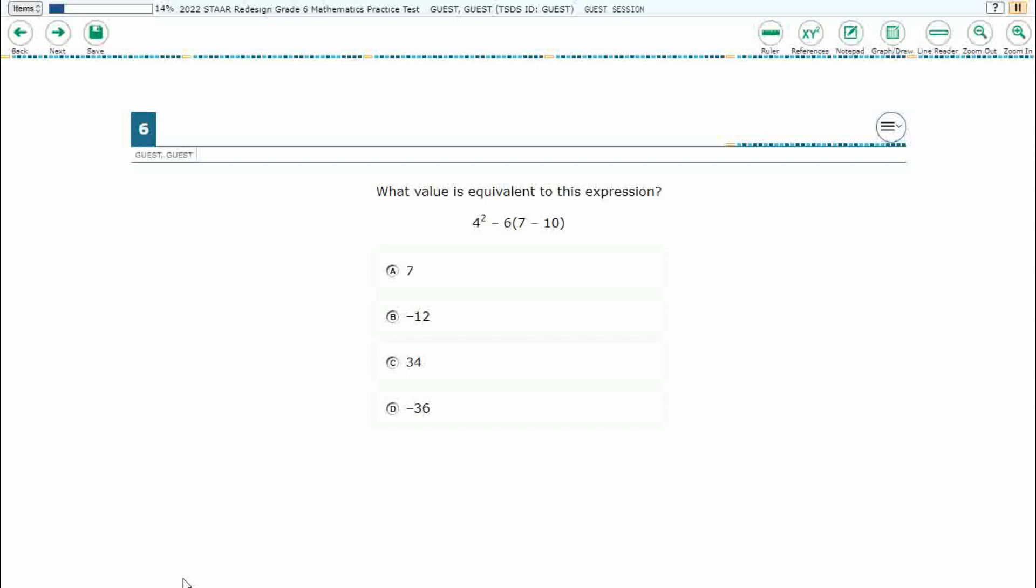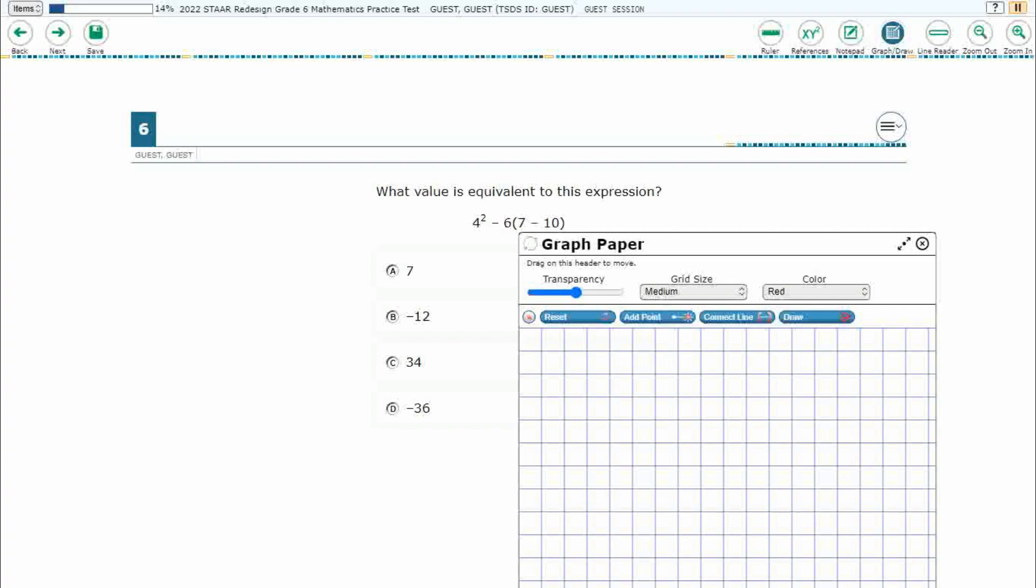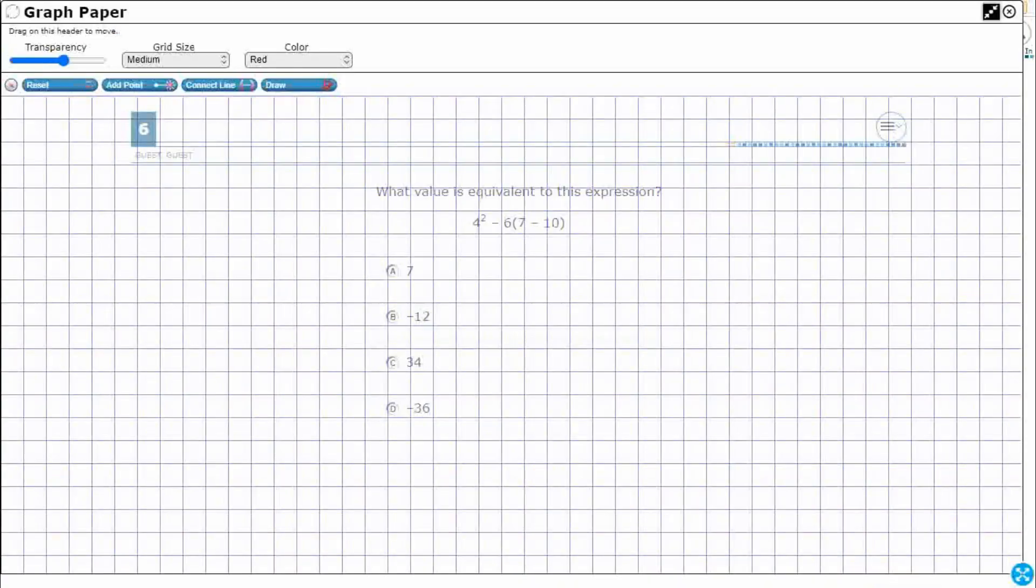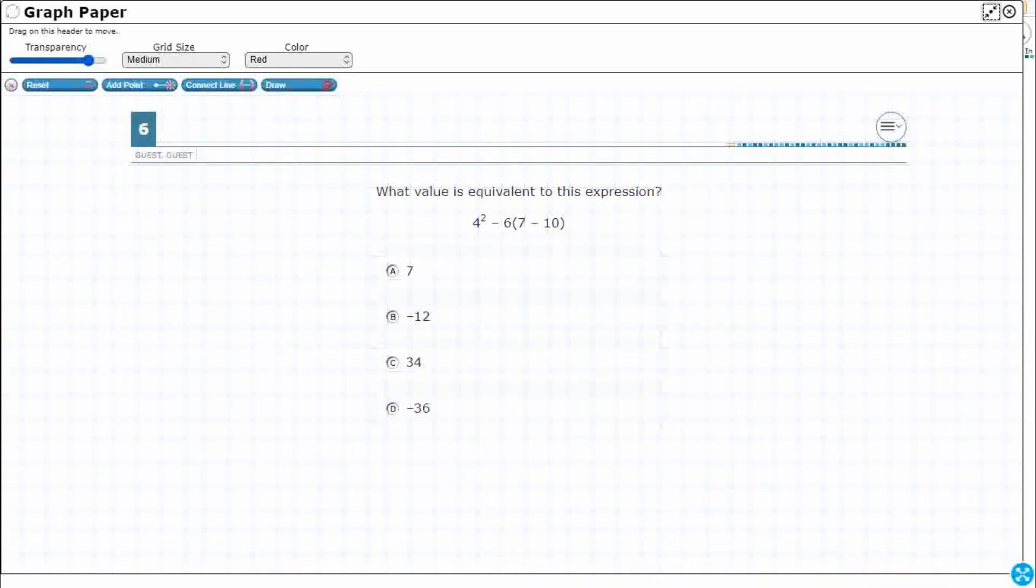Alright, so we need to simplify this expression here: 4 squared minus 6 parentheses 7 minus 10. We've got quite a bit working here. Let's open up our graph draw feature and increase the transparency so we can see what's going on behind it.